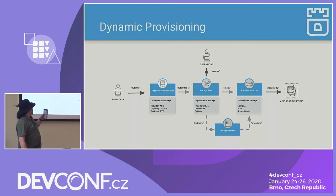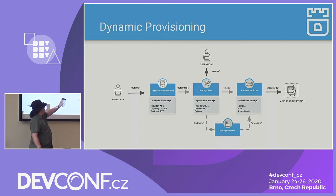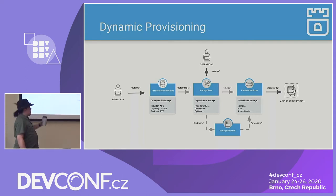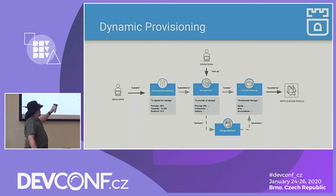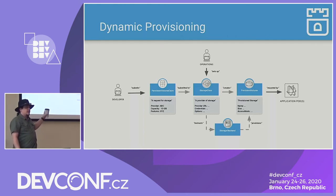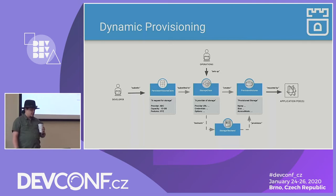Here's the flow I just described. The developer submits a persistent volume claim against the storage class, and the operations administrator sets up the storage class, which then instructs the storage backend to create the persistent volume, which is what's actually mounted by the application pods. This entire process is called dynamic provisioning. The alternative, now known as static provisioning, is where the administrator manually creates individual persistent volumes and those get bound to PVCs. Dynamic provisioning was great — it came around in Kubernetes before I joined the project and I cannot imagine a world without it.